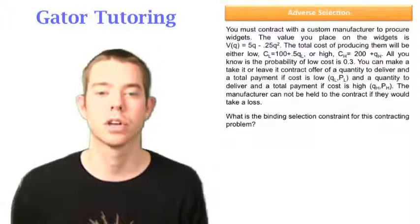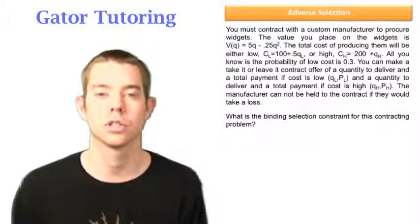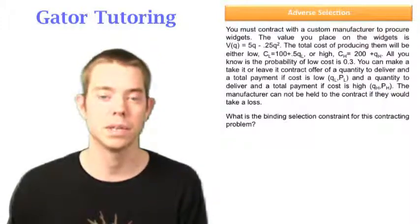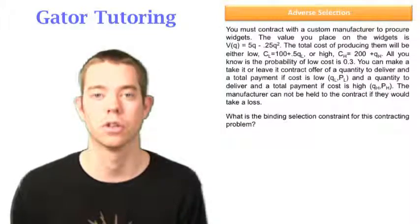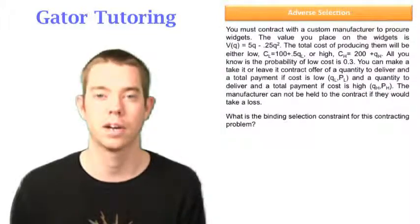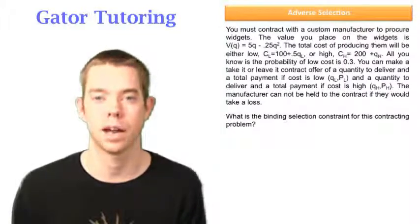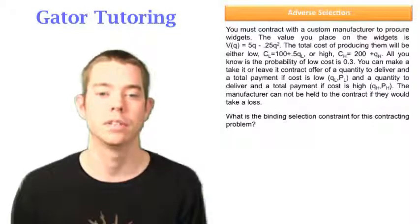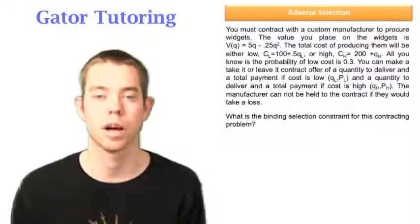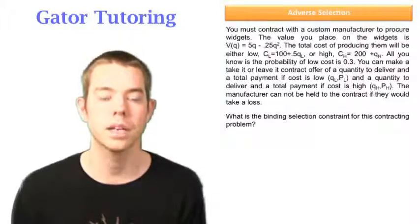It says that you must contract with a custom manufacturer to procure widgets. So again, immediately we say this is an adverse selection question. We're going to read this question and find out more about the value that we can get out of the units that we order, the cost, whether it's a low-cost job or a high-cost job, and the probability of it being a low-cost job. And it gives us all that information.